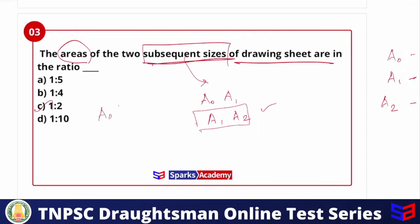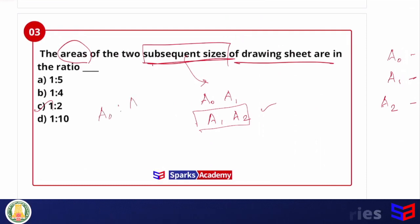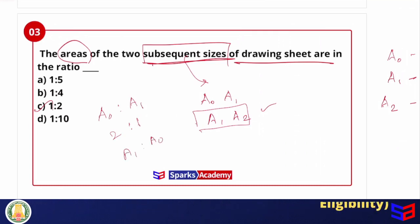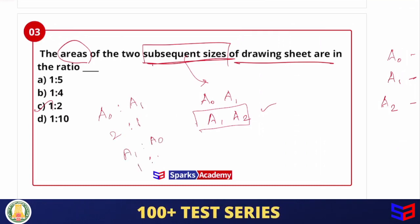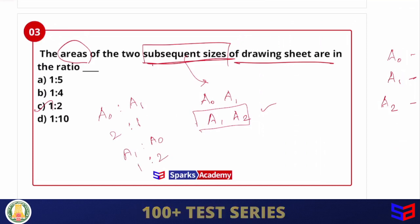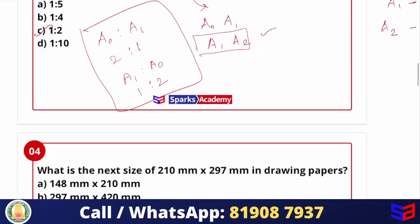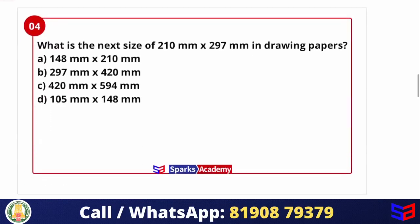For example, if A0 is to A1, the answer is 2:1. If A1 is to A0, the answer is 1:2. The ratio is the same either way — the answer is 1 is to 2.